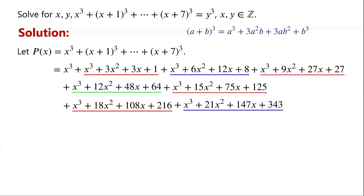Collecting like terms, p(x) equals 8x cubed plus 84x squared plus 420x plus 784.